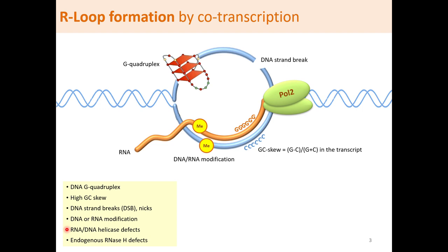RNA in R-loops can be resolved and removed enzymatically. However, defects in endogenous RNase H activity and perturbation of R-loop homeostasis can cause abnormal R-loop buildup.